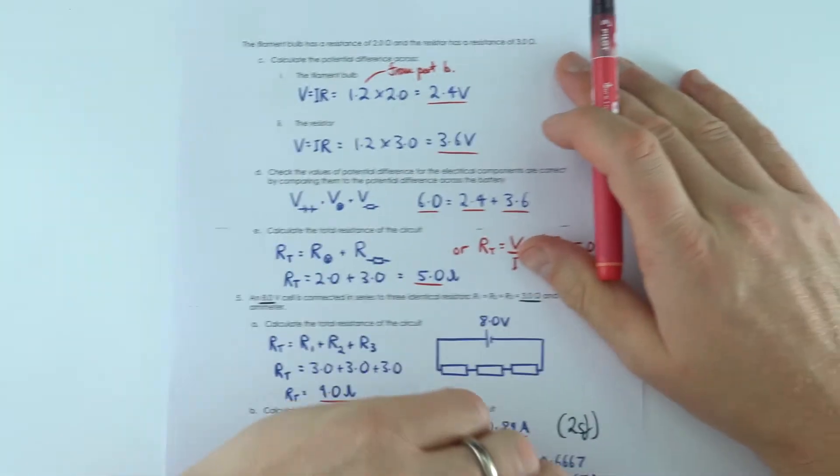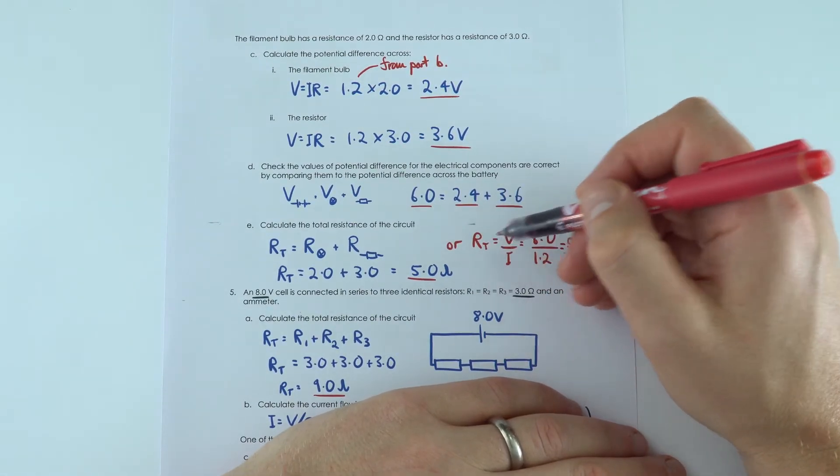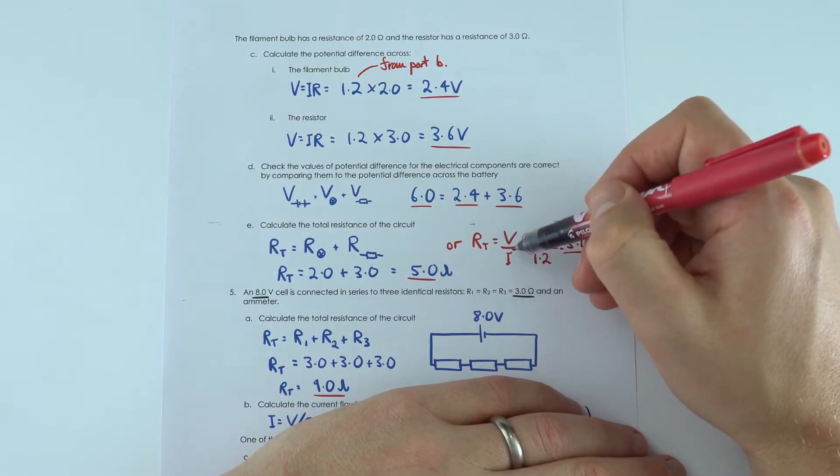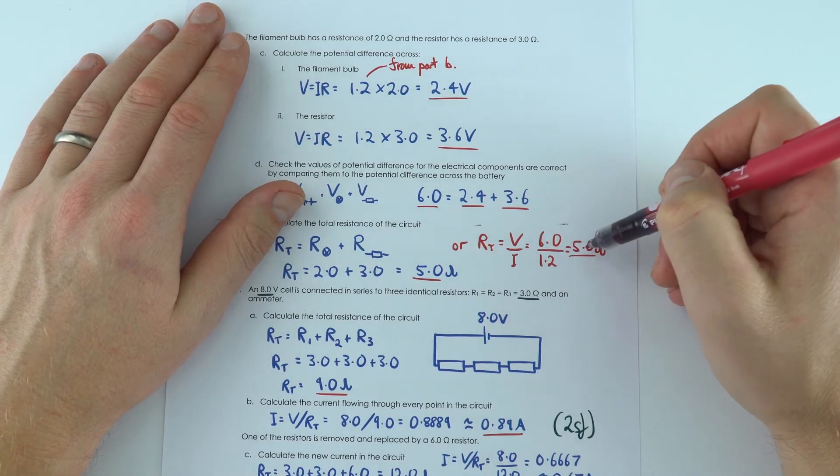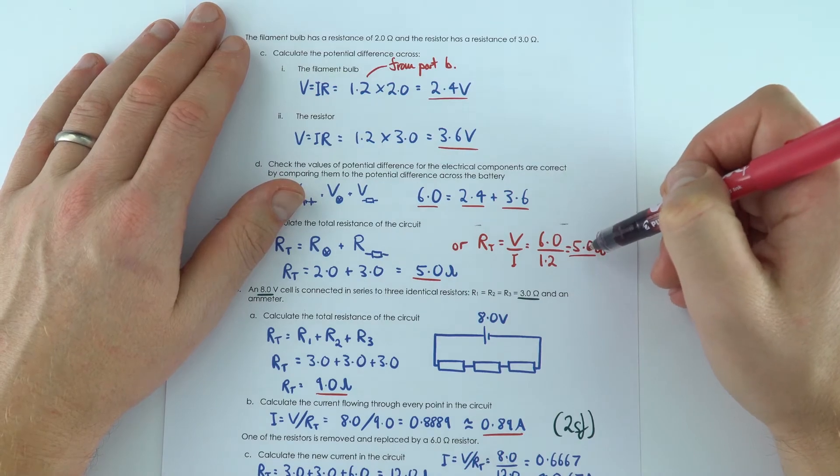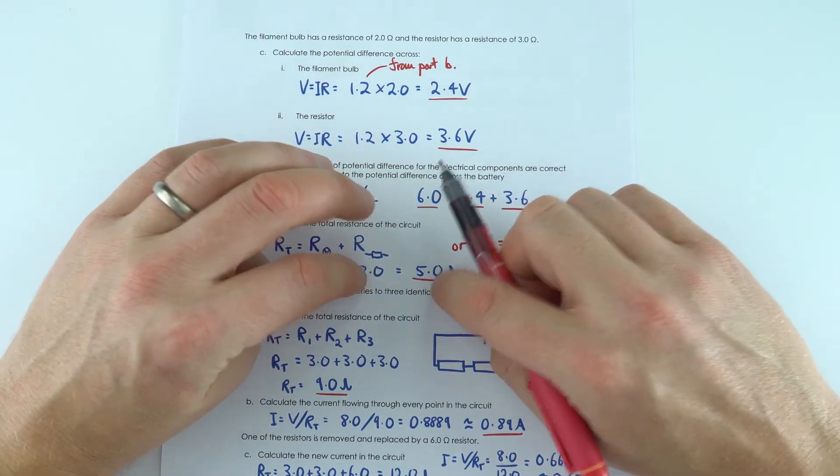And just to check this we can also say that the resistance of that circuit is equal to the potential difference divided by the current. There's a potential difference of 6 volts, the current is 1.2, and that also then shows that the total resistance is 5 ohms. So just two different ways of working at the same answer.